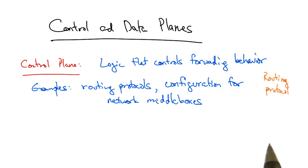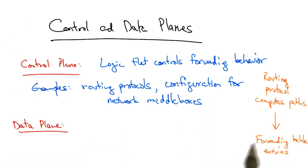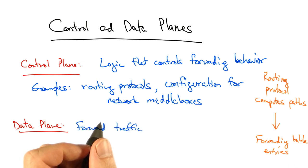Now, a routing protocol might compute shortest paths over a topology, but ultimately, the results of such computations must be installed in switches that actually do the forwarding. The forwarding table entries themselves, and specifically, the actions associated with forwarding traffic according to the control plane logic, is what constitutes the data plane.